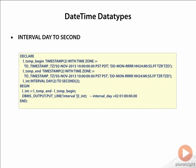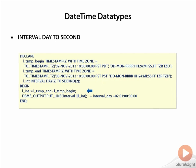Here we have defined two TIMESTAMP WITH TIME ZONE variables. l_timestamp_begin is assigned a value of 2nd November 2013, 10 AM Pacific Standard Time with daylight savings. l_timestamp_end is assigned a value of 3rd November 2013, 10 AM Pacific Standard Time, after daylight savings ended on November 3rd. We then defined a variable lint of type INTERVAL DAY TO SECOND to hold the difference of the two timestamps.